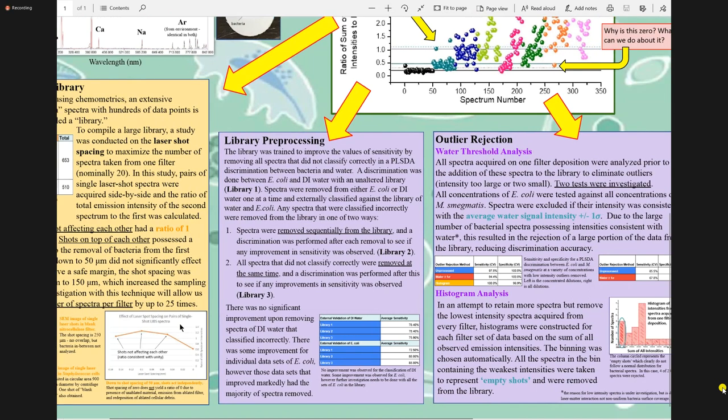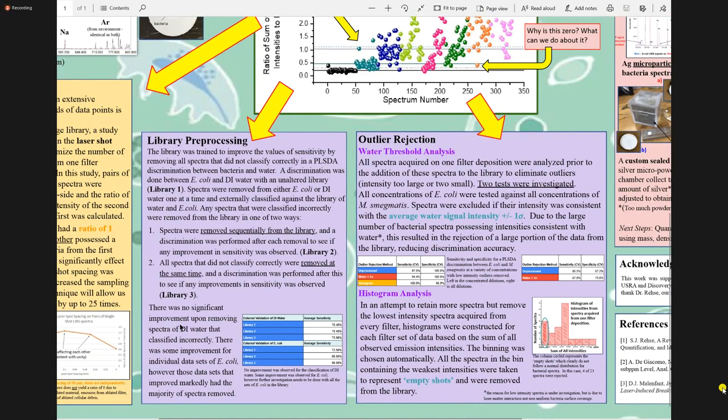Now on to the actual solution of the problem. Training the library is one of our approaches to improving classification and that's shown in this left purple box here. The idea here is to remove any spectra that did not classify correctly from the library essentially taking only the best data moving forward to keep in the library. This method is still under investigation but it is showing some promising results. Our next technique in the same vein is called outlier rejection. The goal of this technique is to remove outliers as the spectra are being acquired or as they are being shot thus eliminating any spectra with a weak signal before they even make it to being classified.